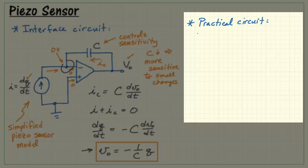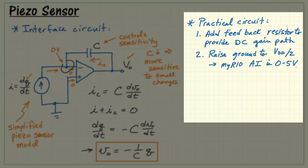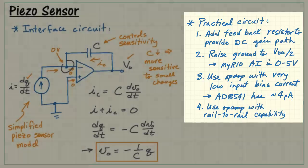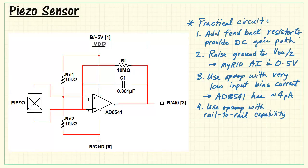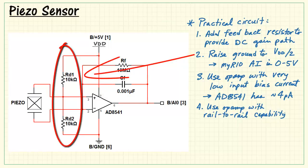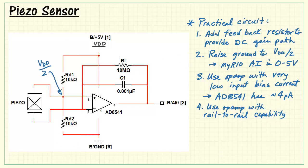There are four considerations for making this into a practical circuit. We need to add a feedback resistance to provide a DC gain path. We need to raise the ground to one-half the supply voltage, because the real analog input is only 0 to 5 volts. We want an op-amp with very low input bias current, and the analog device's AD8541 only has about 4 picoamps of bias current. And finally, we want an op-amp with rail-to-rail capability to make full use of the analog input range. Here's my feedback resistor. 10 meg works nicely. 0.001 microfarads works well for many applications for the capacitor value. The voltage divider with equal-valued resistors splits the supply voltage in half, and that gives us a value that's midway between zero and VDD when the sensor is at rest.